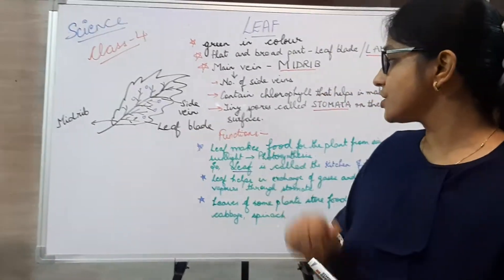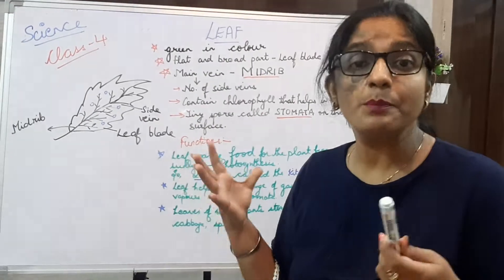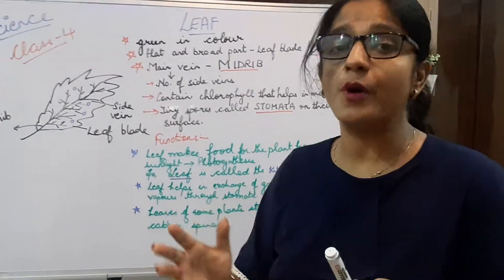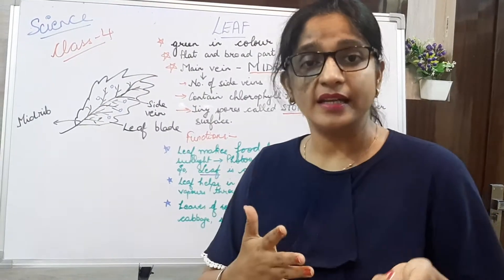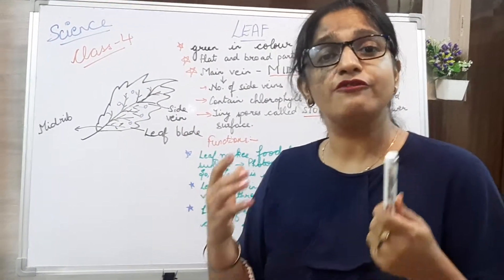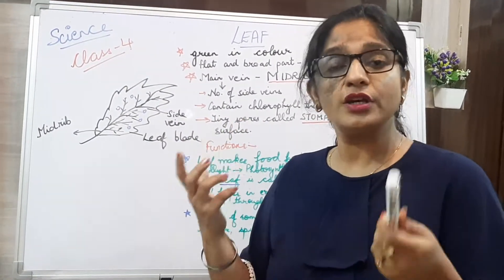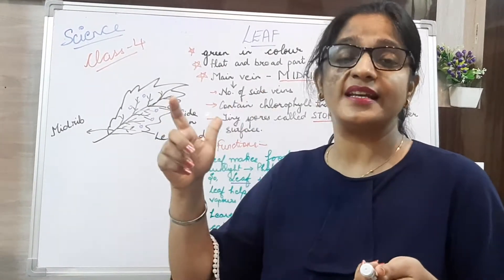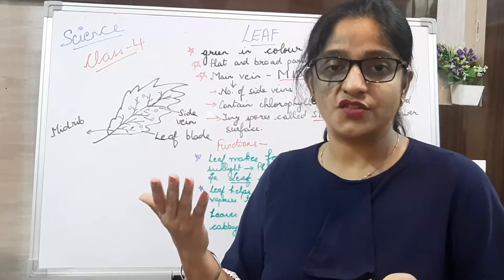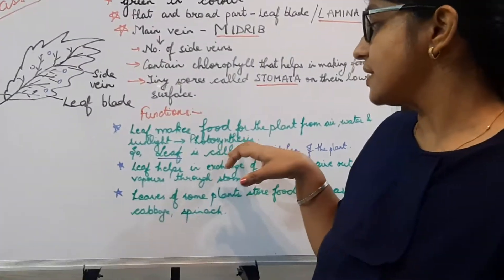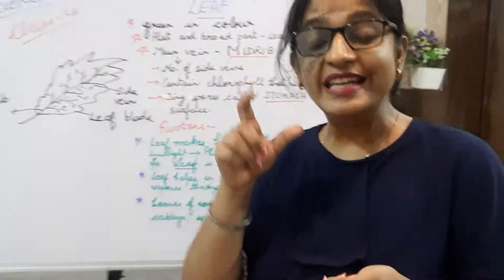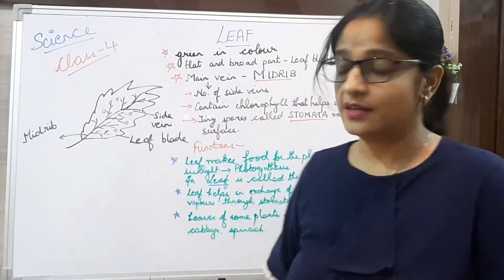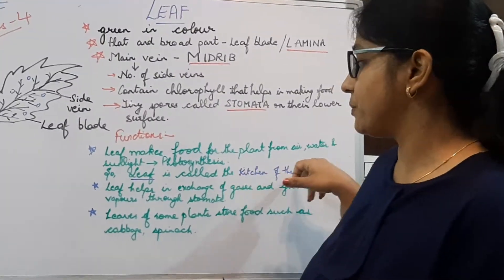Now, what are the functions of the leaf? Leaf makes food for the entire plant with the help of air, water, and sunlight. This process of making food through air, water, and sunlight is called photosynthesis, which we will separately study in detail in the next video. Since leaf makes food for the whole plant, leaf is called the kitchen of the plant.